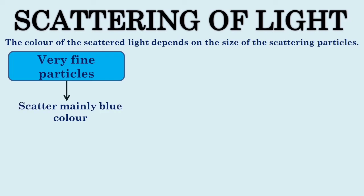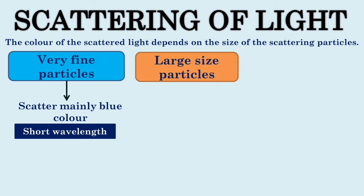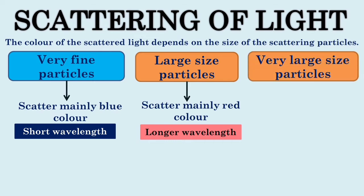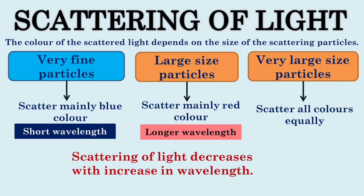Very fine minute particles scatter mainly the blue light, that is shorter wavelength of light, whereas large sized particles scatter longer wavelength of light, that is mainly red color. Whereas very large sized particles scatter all colors equally. This shows that scattering of light decreases when the wavelength increases.